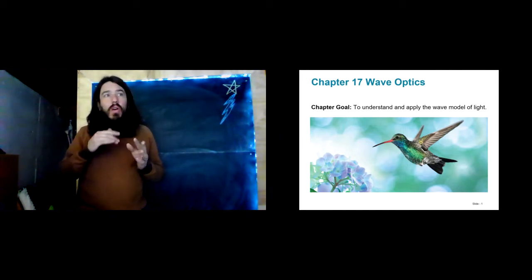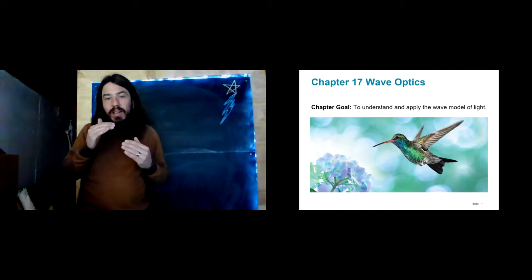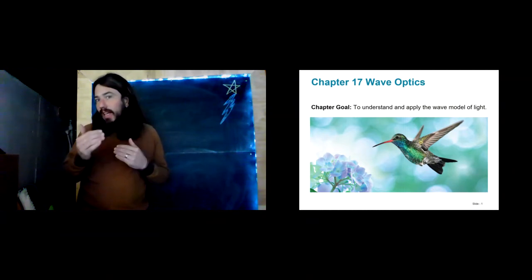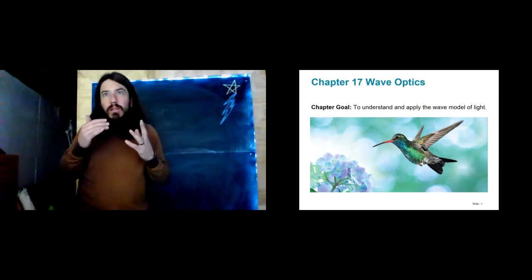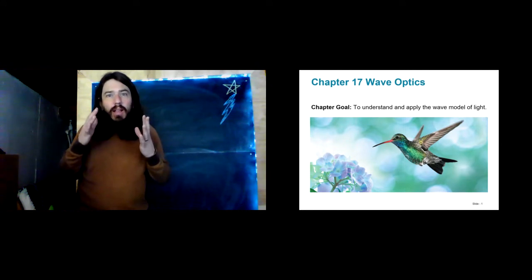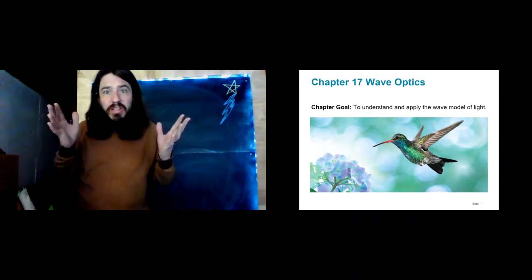We've learned now that light is a wiggling electric and magnetic field. Let's see what kind of phenomena that leads to.